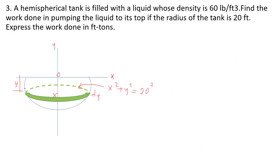An iron spherical tank is filled with a liquid whose density is 60 pounds per cubic foot. Find the work done in pumping the liquid to its top, if the radius of the tank is 20 feet. Express the work done in terms of π.